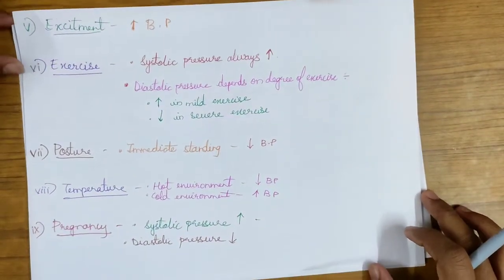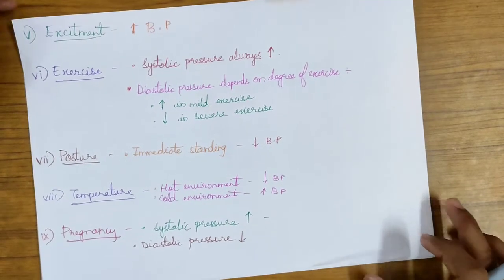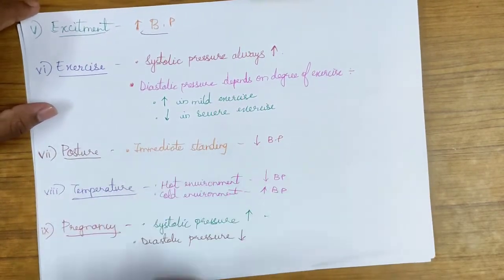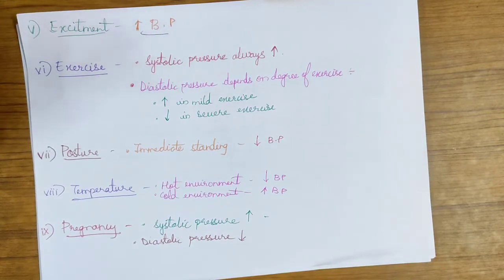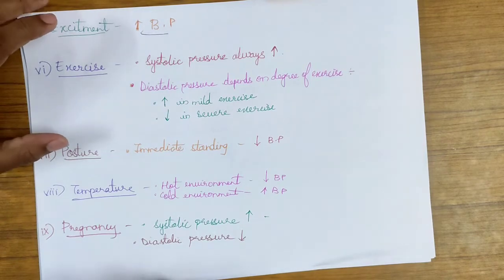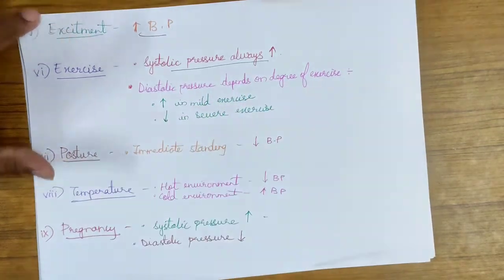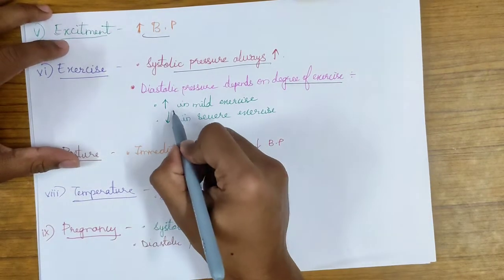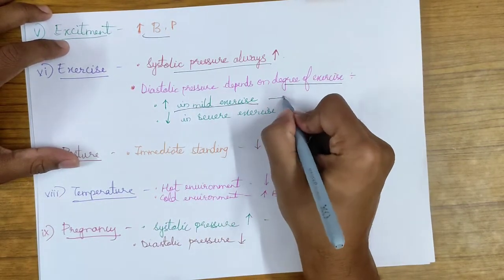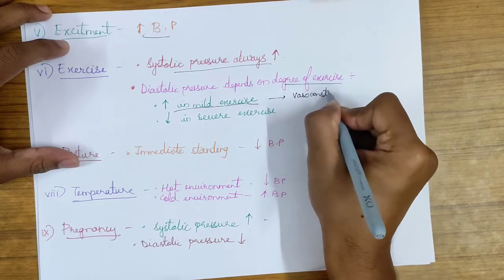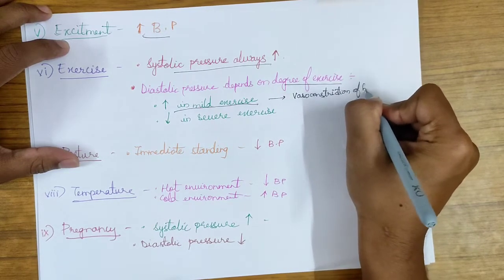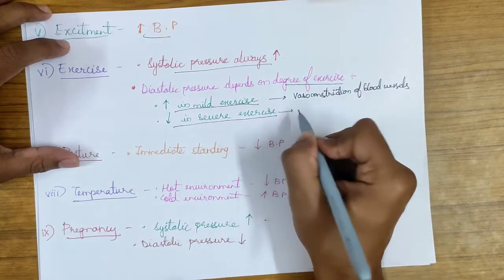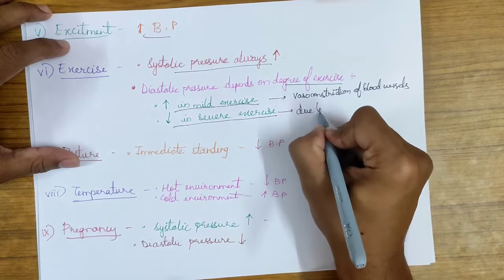The next factor is excitement. During excitement, sympathetic stimulation is activated and therefore blood pressure increases. The next factor is exercise. In exercise, systolic and diastolic pressures vary differently. Systolic pressure always increases during exercise. Diastolic pressure depends on the degree of exercise — it increases in mild exercise due to vasoconstriction of blood vessels.